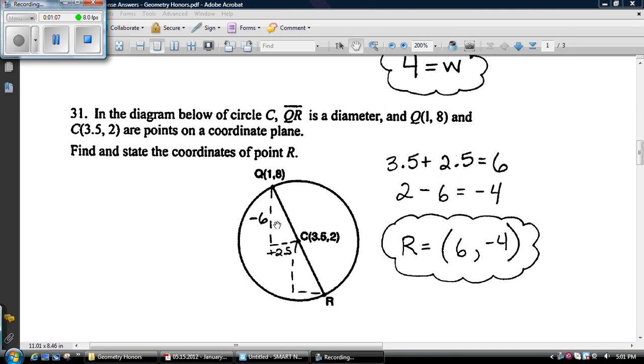Question 31. There are lots of different ways you could do it. I just counted, to be honest with you. I went down 6 over 2.5 to get to the midpoint at the center. And then I just went down 6, that's me subtracting 6, and I went over 2.5, that's me adding 2.5 to get the coordinate for R.